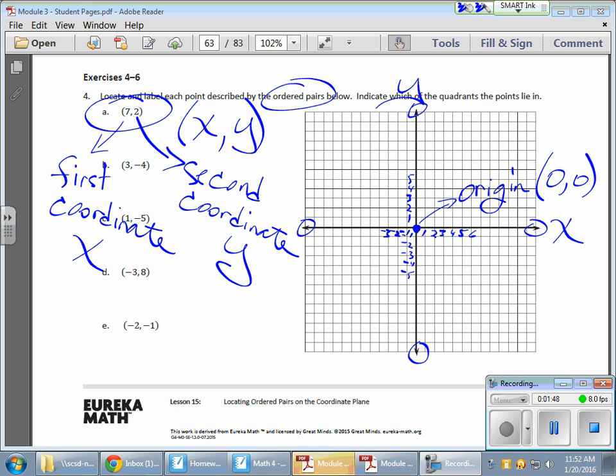So our first coordinate here, our ordered pair is seven comma two. So seven goes with the x, and the two goes with the y. So I need to count over to seven, which is right over here, okay? And then up two on the y. So seven for the x, right, seven for the x, two for the y, and they meet right there, okay?